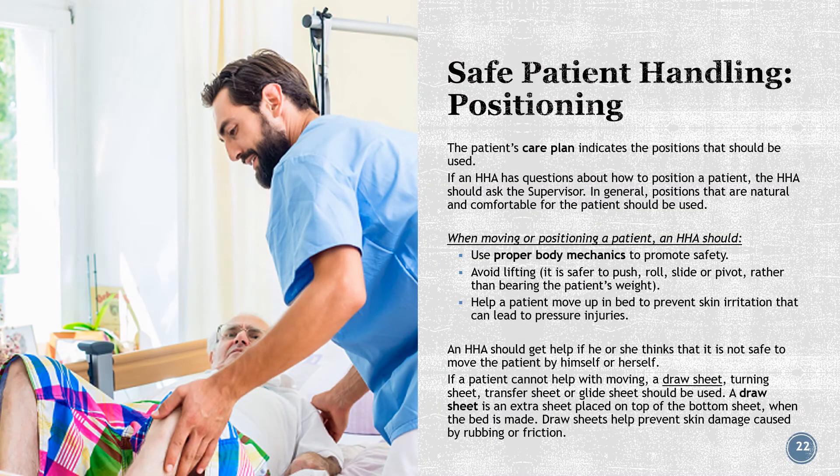The patient's care plan indicates the positions that should be used. If an HHA has questions about how to position a patient, they should ask the supervisor. Generally, positions that are natural and comfortable for the patient should be used. When moving or positioning a patient, HHAs should use proper body mechanics to promote safety — avoid lifting; it is safer to push, roll, slide, or pivot. To prevent skin irritation that can lead to pressure injuries, get help if it is not safe to move the patient alone. If a patient cannot help with moving, a draw sheet, turning sheet, transfer sheet, or glide sheet should be used. A draw sheet is an extra sheet placed on top of the bottom sheet to help prevent skin damage caused by rubbing or friction.